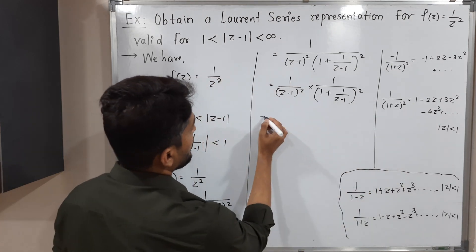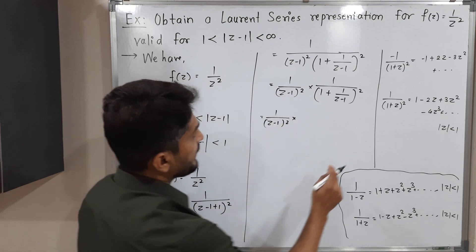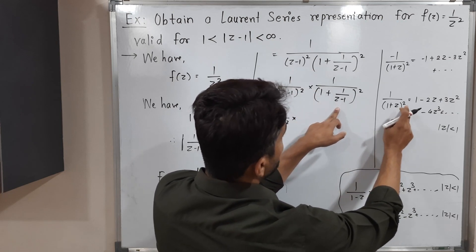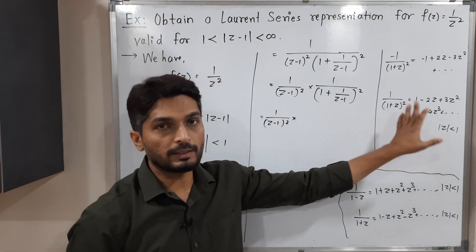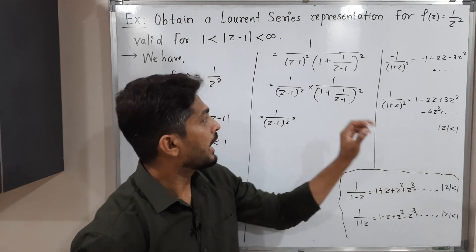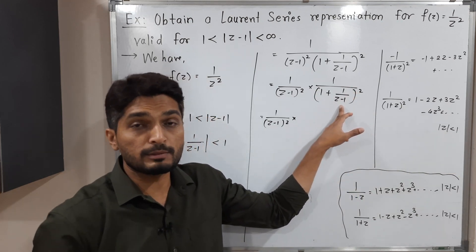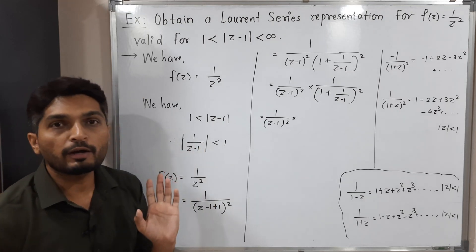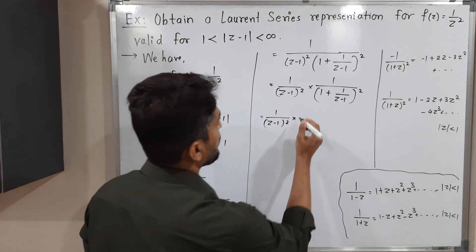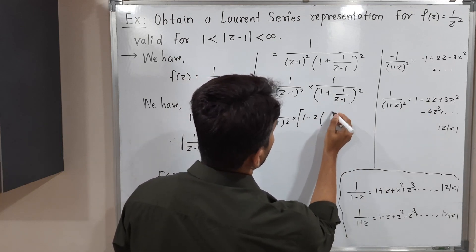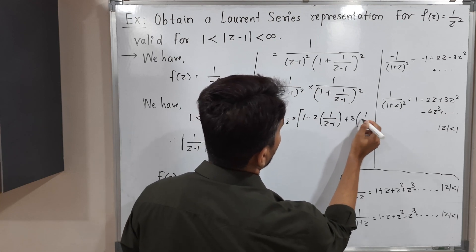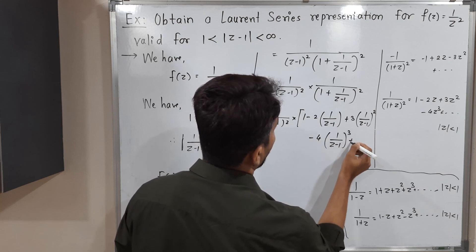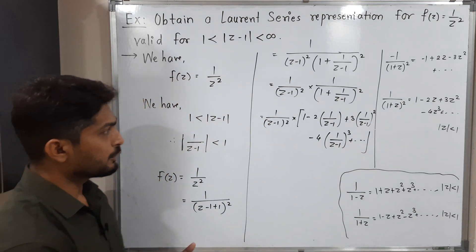Now we can use this new series for 1/(1 + 1/(z-1))². At the place of z we have 1/(z-1), and we need |1/(z-1)| < 1, i.e., |z-1| > 1, which is already given by our domain condition. Substituting: 1/(1 + 1/(z-1))² = 1 - 2·(1/(z-1)) + 3·(1/(z-1))² - 4·(1/(z-1))³ + ...